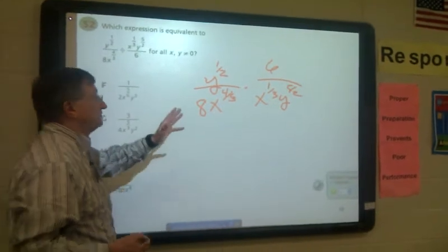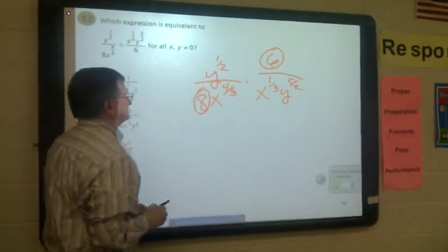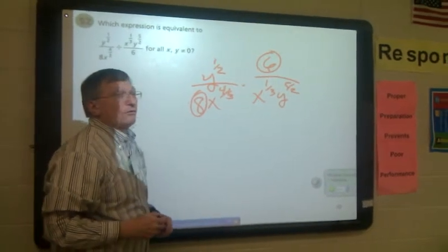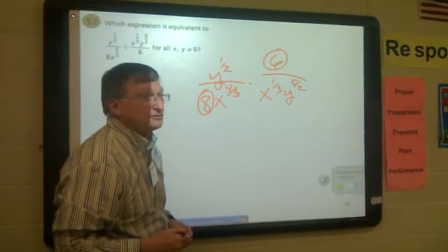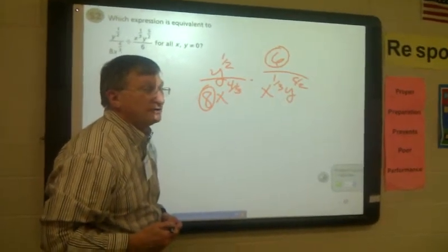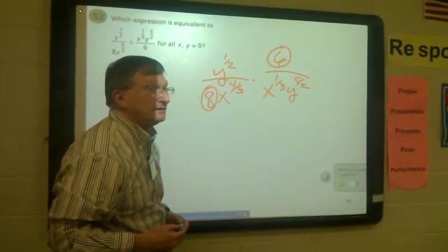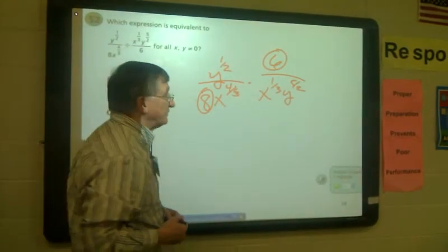Just like the last little problem. Now, look at this. We've got a six up here and an eight down here. What does that give you as far as the coefficients are concerned, as far as the numbers are concerned? Six over eight. Can you reduce that?